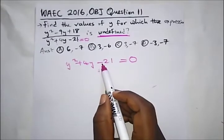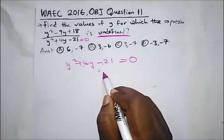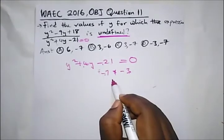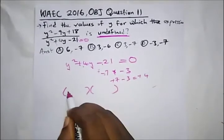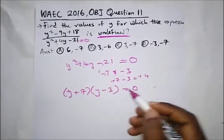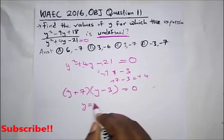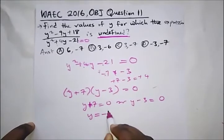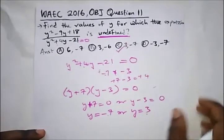We need two factors which when multiplied give minus 21 and when added give plus 4. Those two factors are plus 7 and minus 3: multiplying gives minus 21, and 7 minus 3 gives plus 4. So we open the brackets: (Y plus 7)(Y minus 3) equals zero. Therefore Y equals minus 7 or Y equals 3. The answer is option C.